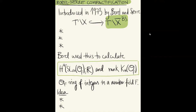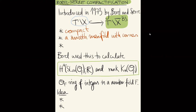The main properties of the Borel-Serre compactification are: first, it's compact. Second, it's no longer a smooth manifold but a smooth manifold with corners — so almost as good. The inclusion identifies X/gamma as the interior of this manifold with corners; in particular, this inclusion is a homotopy equivalence. So the Borel-Serre compactification is also a model for the classifying space of gamma — a compact geometric model.